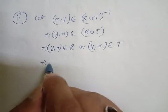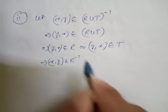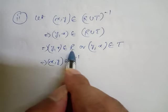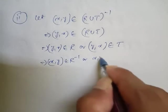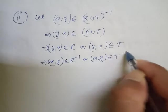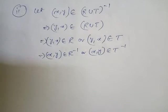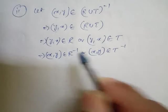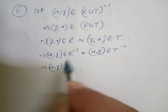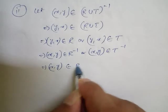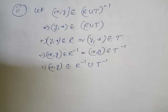So y comma x belongs to R or y comma x belongs to T — split up. Now we can say that x comma y belongs to R inverse, or x comma y belongs to T inverse.